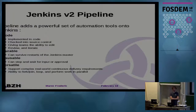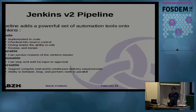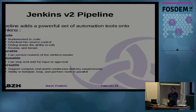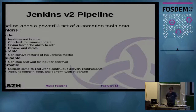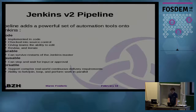It's durable — the pipeline can survive a restart of Jenkins. It's pausable — it can wait for input. And it's versatile — it has the ability to fork and join, and perform work in parallel.